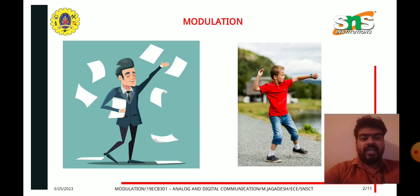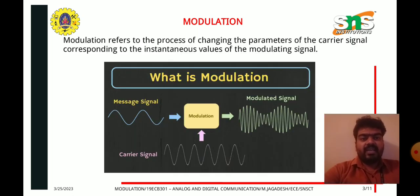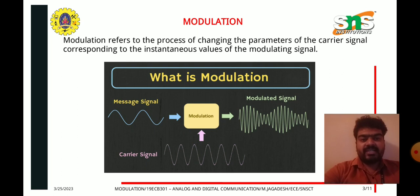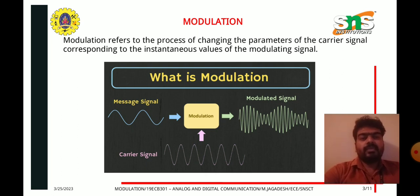Now let's correlate this example with the actual modulation process in communication. In this image, the message signal — compared to the paper containing information — and the carrier signal, compared to the stone, carries the message signal to the destination point. A modulator performs this modulation process.